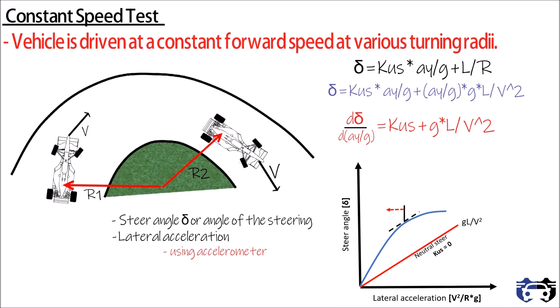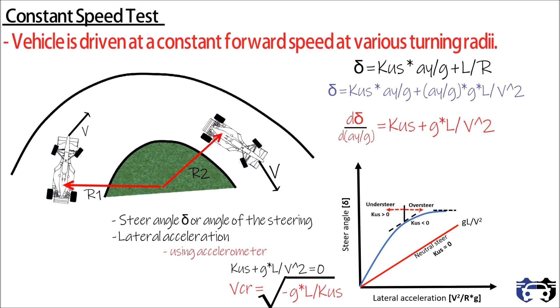If kus is not 0, we have a curve where slope changes. Moving towards the left, the slope is greater than the slope of neutral steer, which means kus is greater than 0, so this is understeer. Moving towards the right, the slope is less than the slope of neutral steer, meaning kus is less than 0, so this is oversteer. When slope equals 0, kus plus gL divided by V squared equals 0, giving us the critical speed: Vcr equals the square root of minus gL divided by kus. Since in the oversteer region kus is negative, we get a positive speed. Beyond this critical speed the car is unstable; before it, the car is in a stable condition.